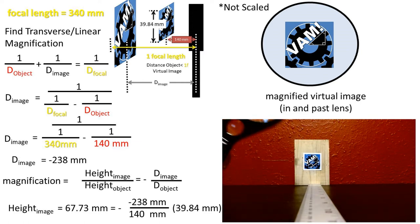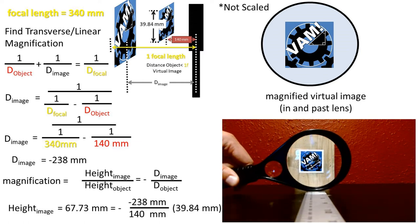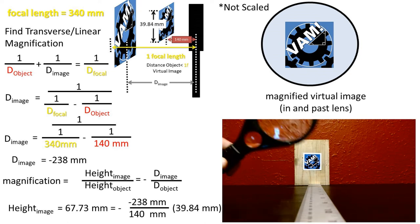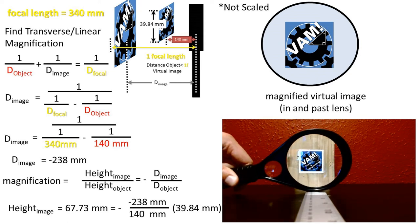Just for kicks, let's rearrange the linear magnification formula to get the image height to one side. We get an image height of 67.73 millimeters.